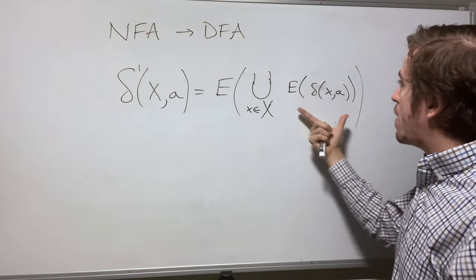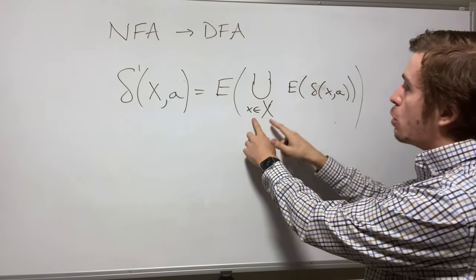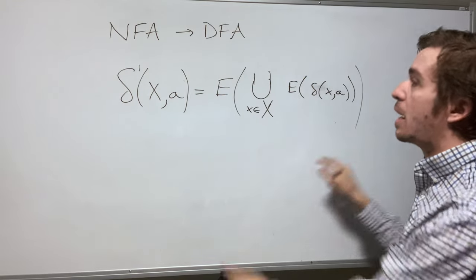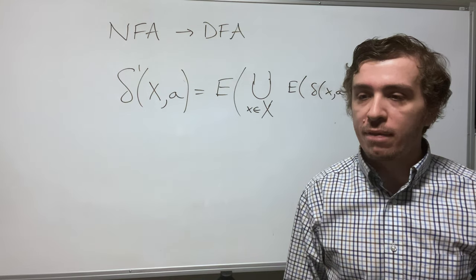Figured out where it went in the NFA. Figure out the epsilon closure of that. Then take the union of all individual states in that particular set of states and then take the epsilon closure of that. It's just completely obvious.